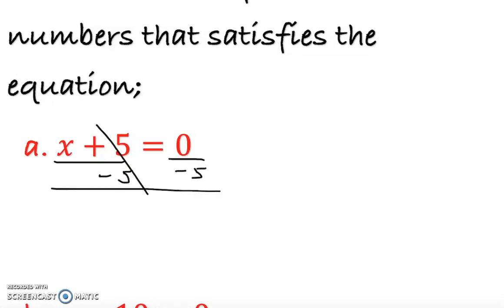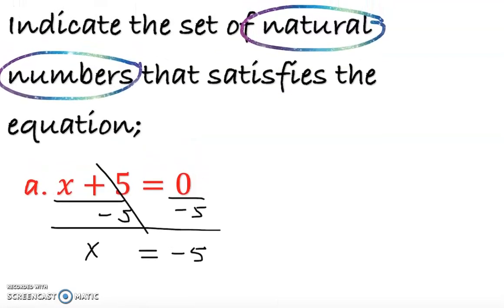We minus 5 on both sides, so we cancel this out and x = -5. Now is this a solution? Some of you say yes, why not, but maybe you forget about this very important point: natural numbers.